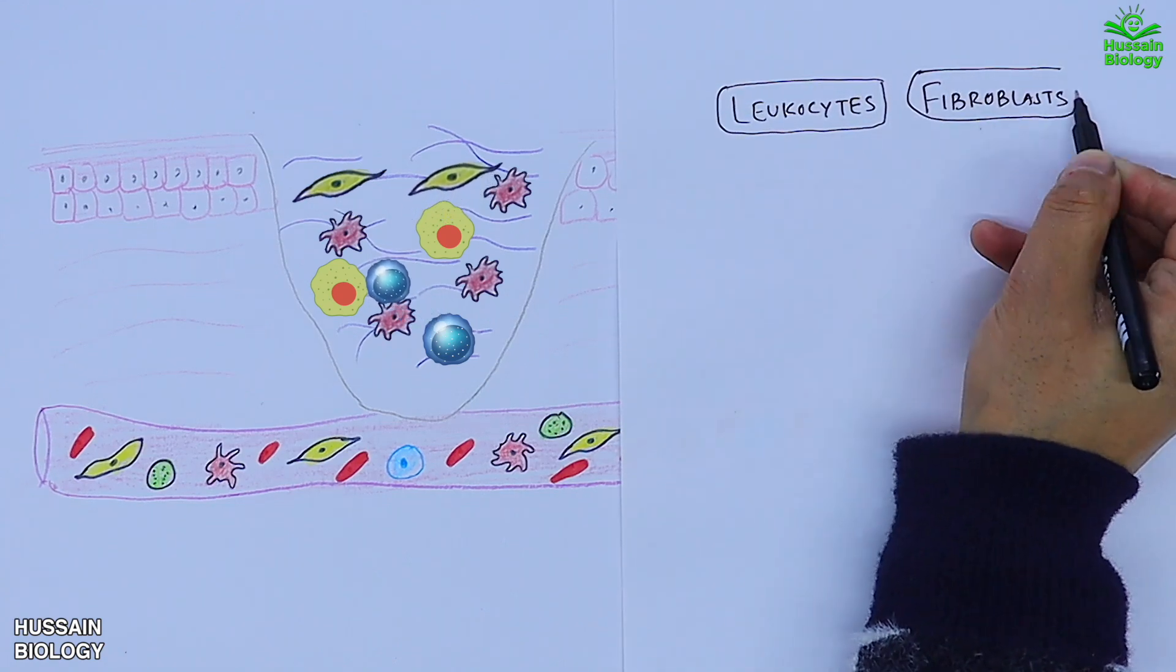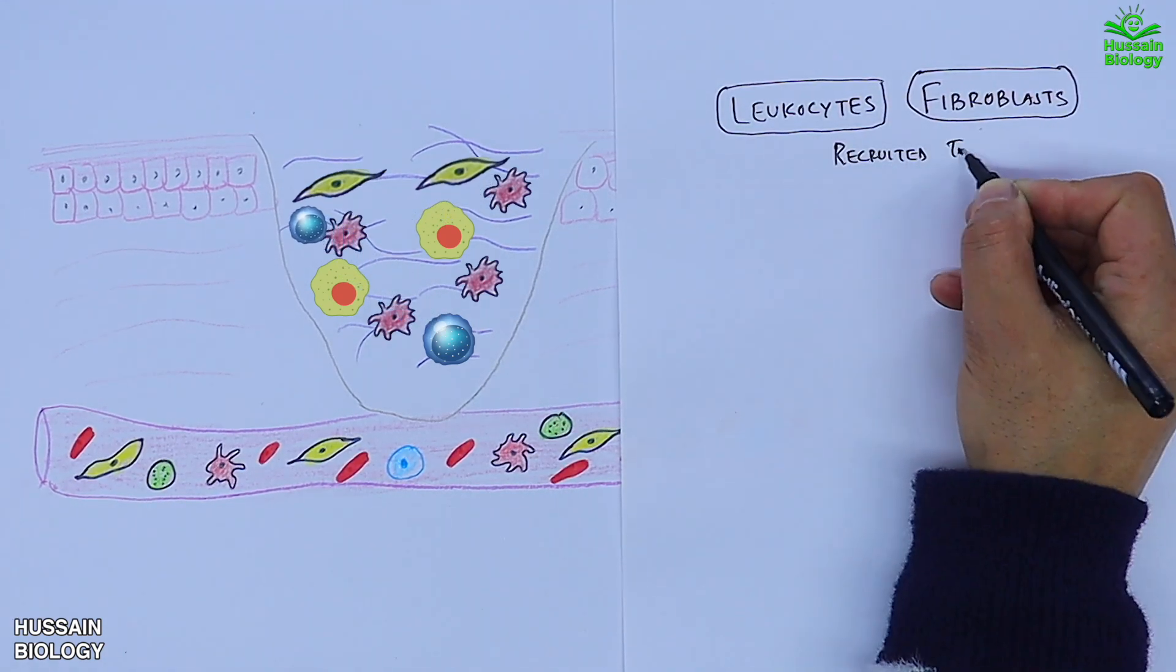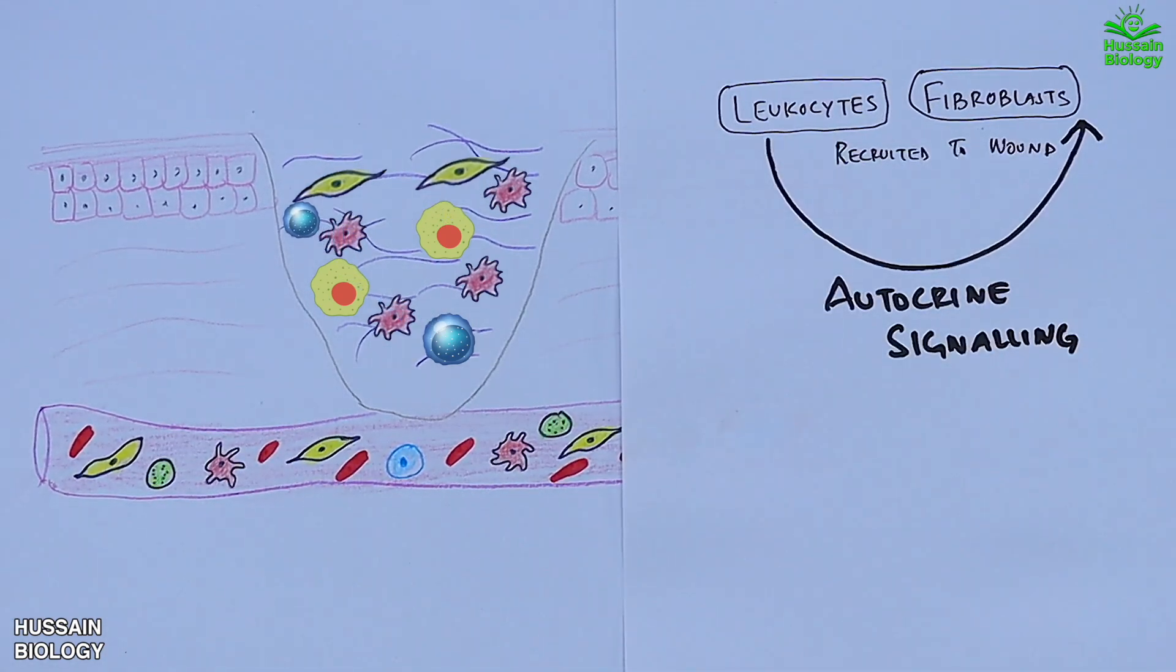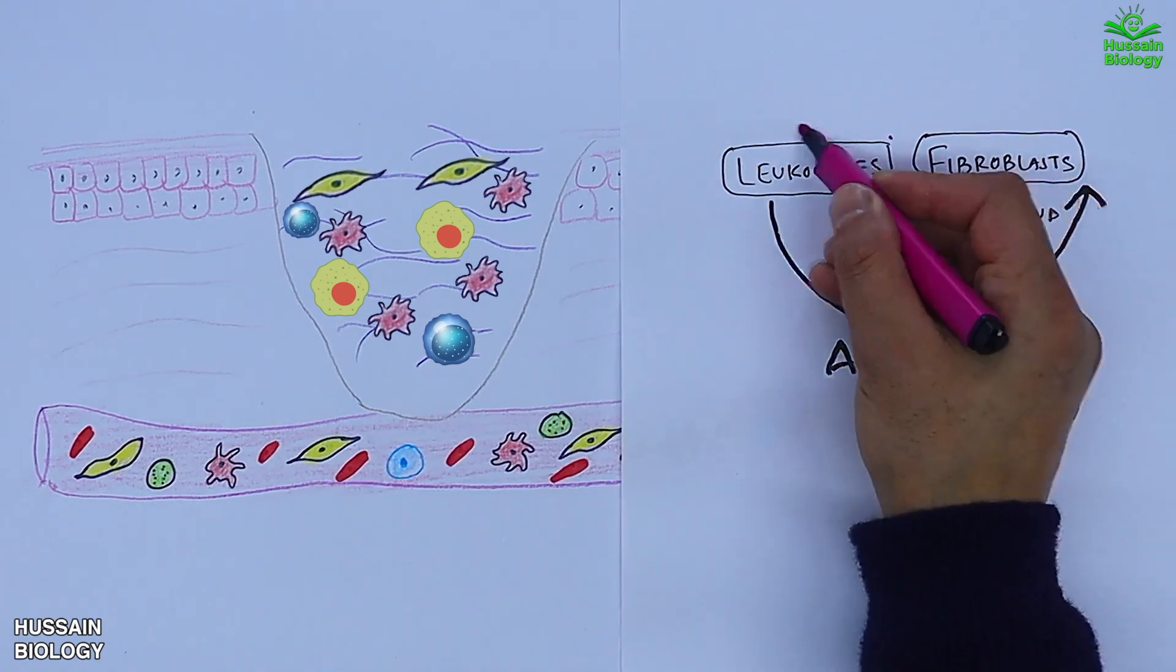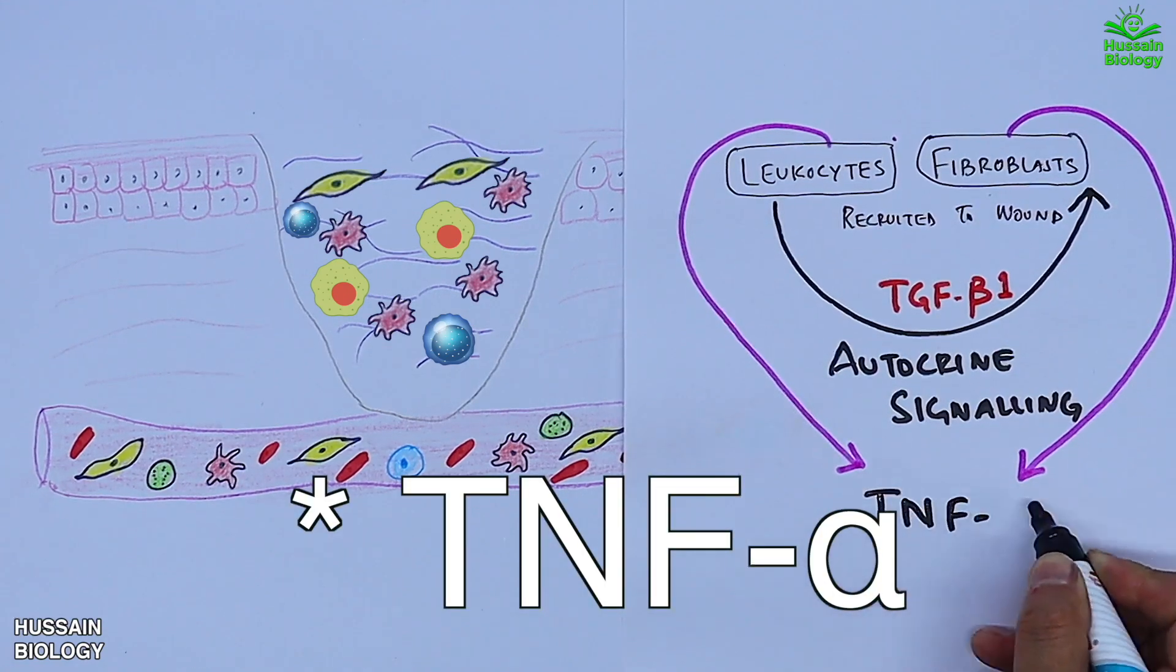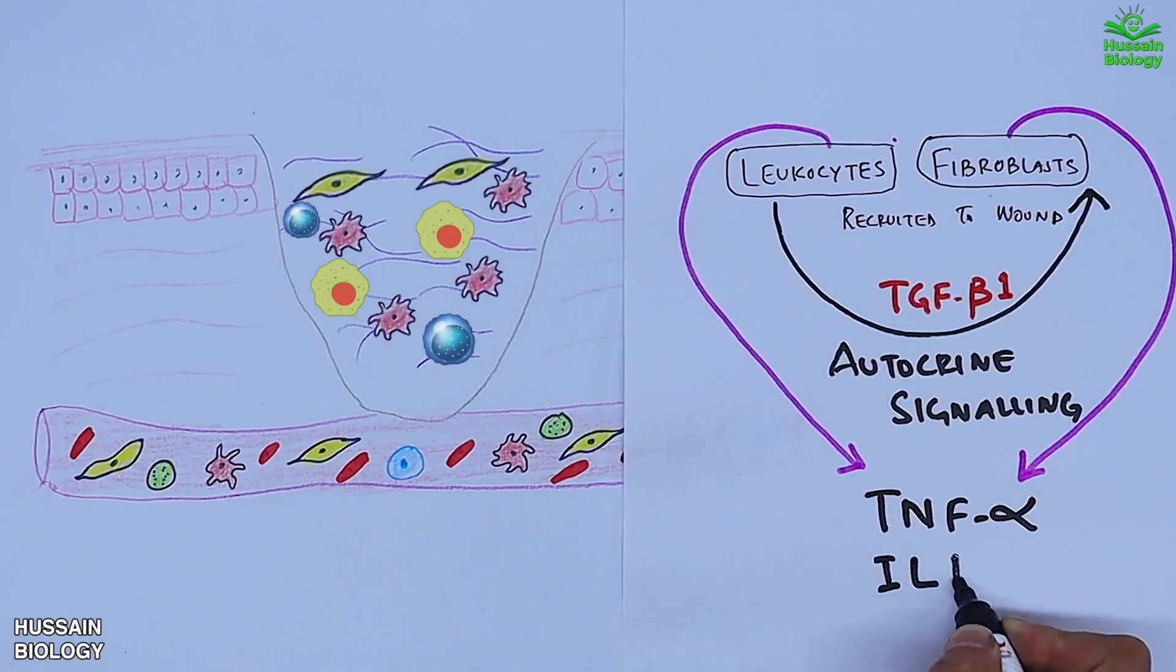These cells, that's leukocytes and fibroblasts, stimulate itself via autocrine signaling through a molecule that's TGF-beta-1, and then we get the secretion of INF-alpha, interleukin-1, and PDGF from these cells. And the interleukin-1 drives inflammation.